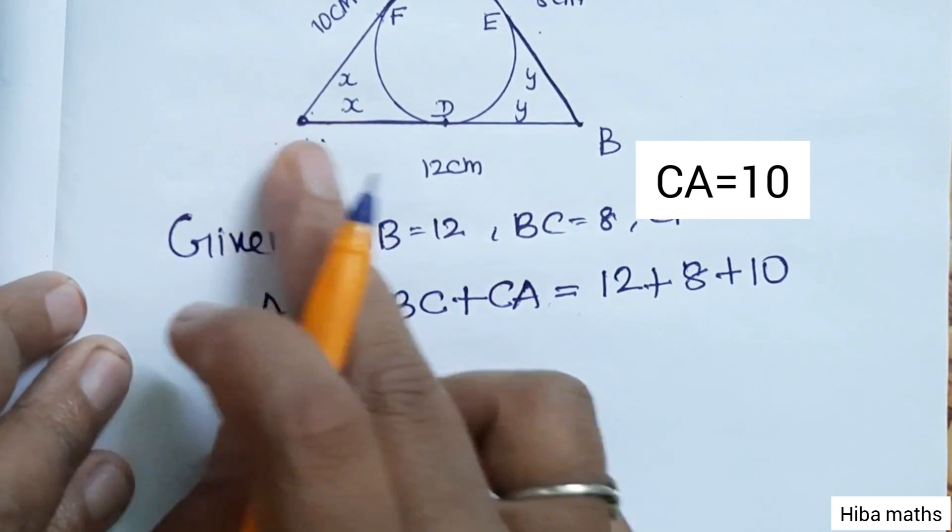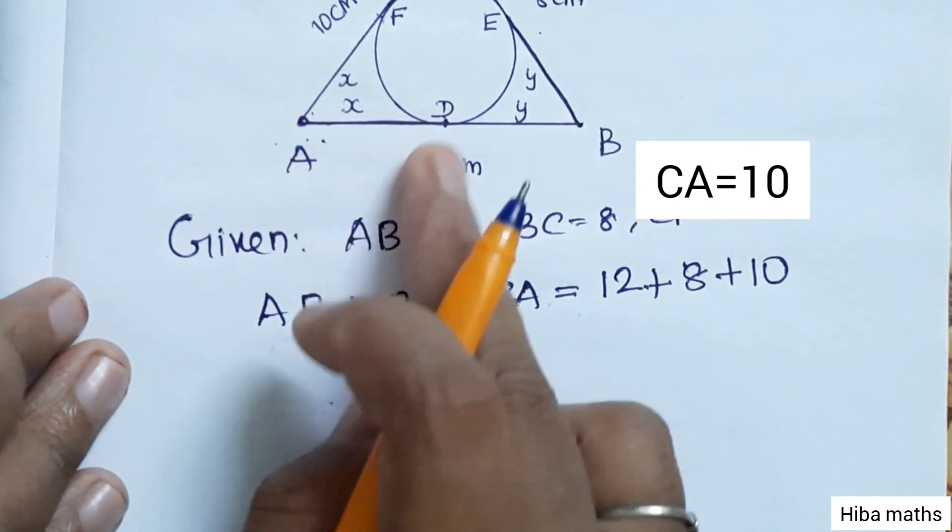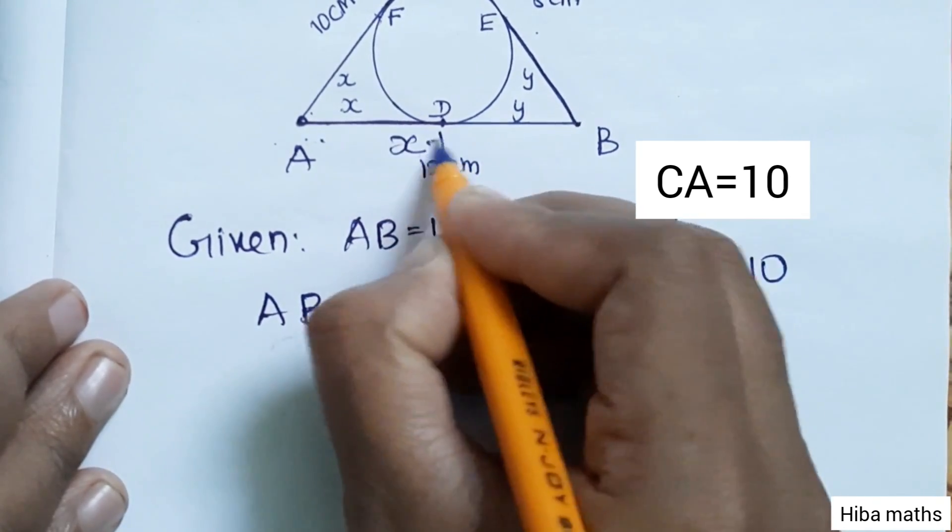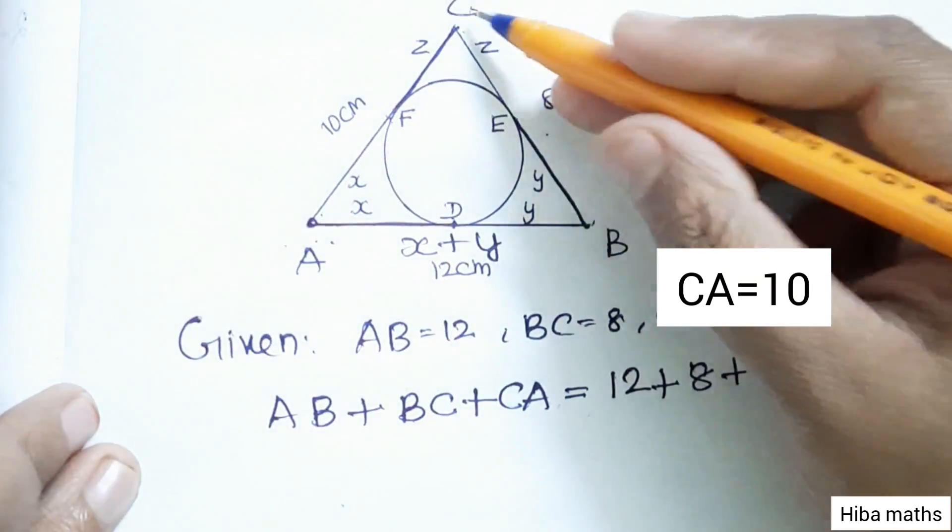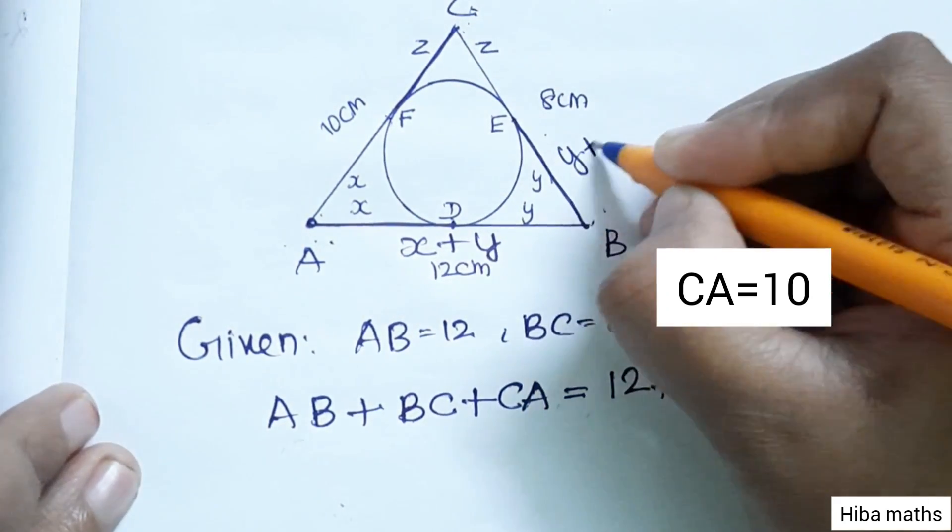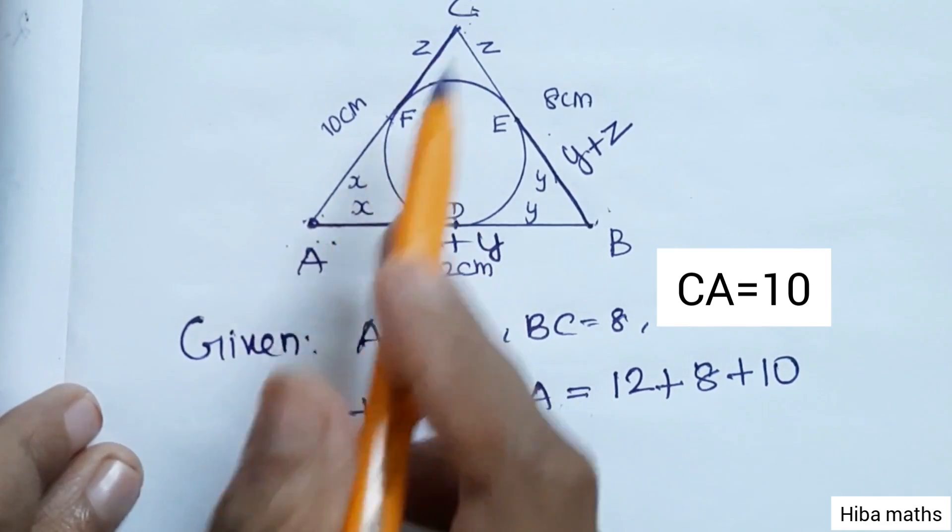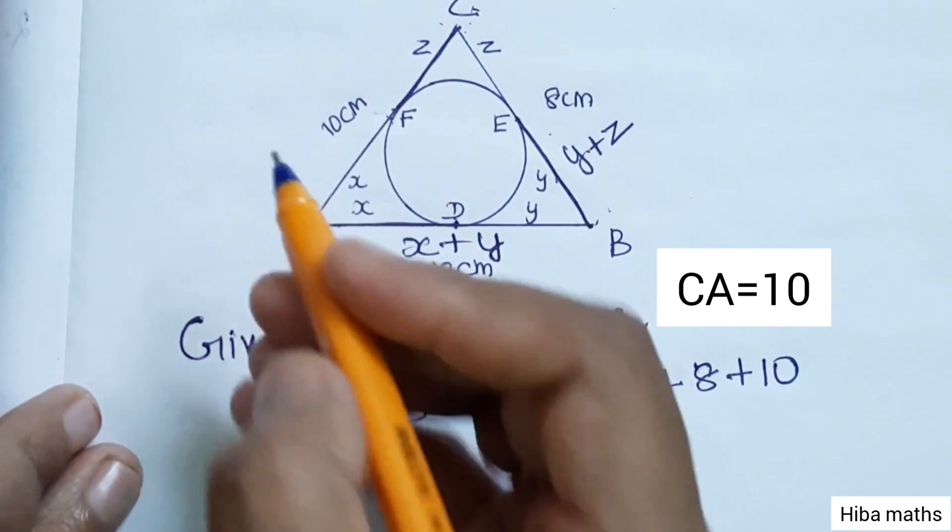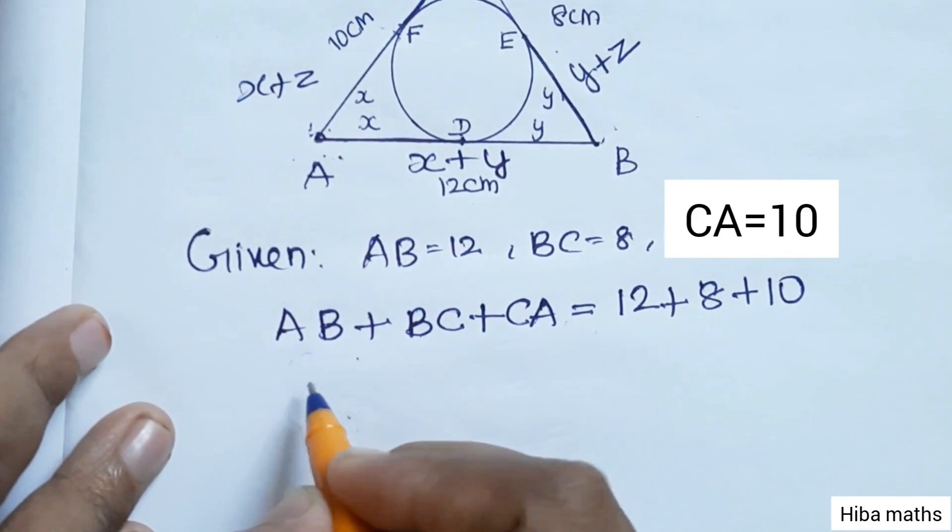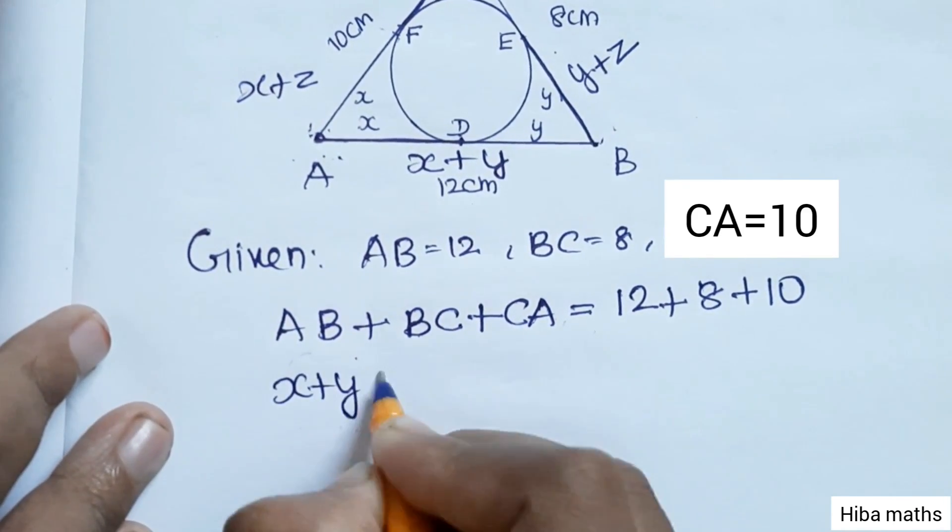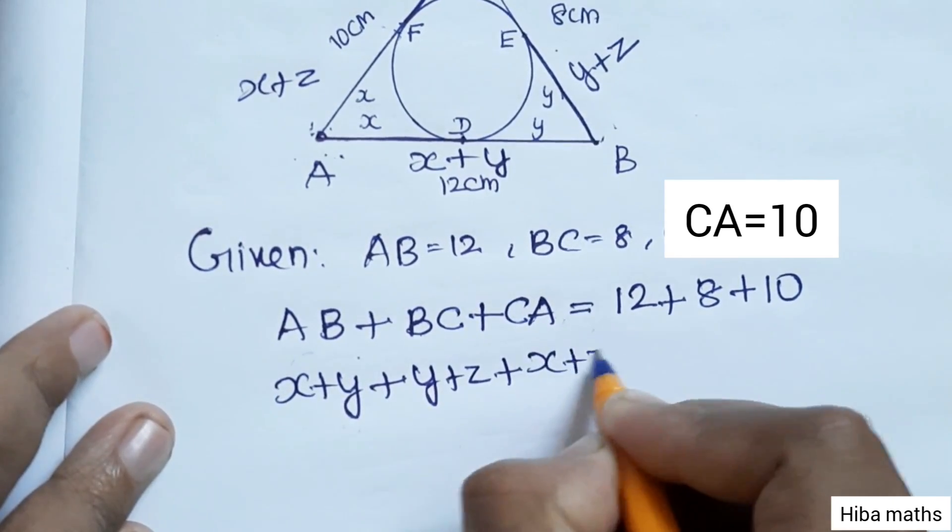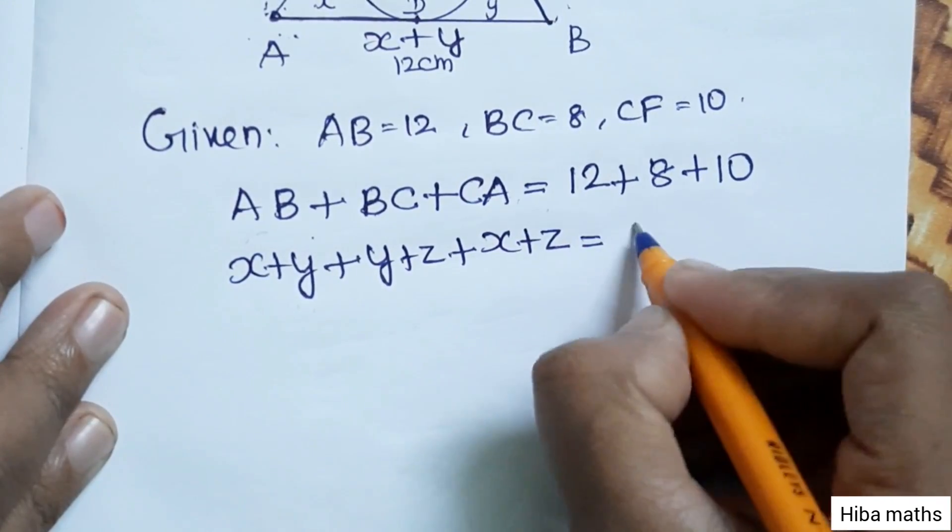AB is AD plus DB, which in full length is x plus y. BC is BE plus EC, then y plus z. AC is AF plus FC, then x plus z. Now AB is x plus y, BC is y plus z, then CA is x plus z equals 30.